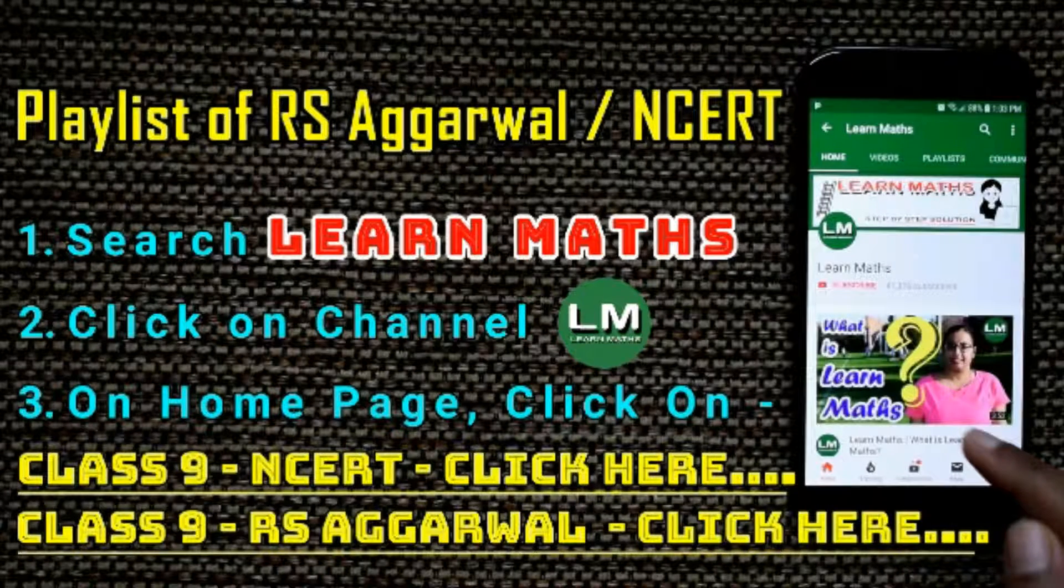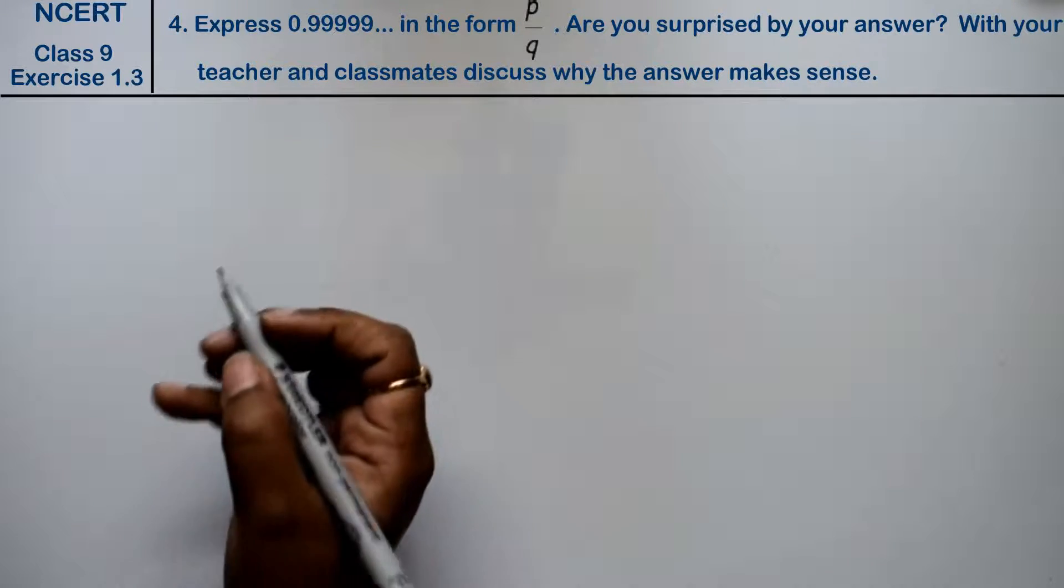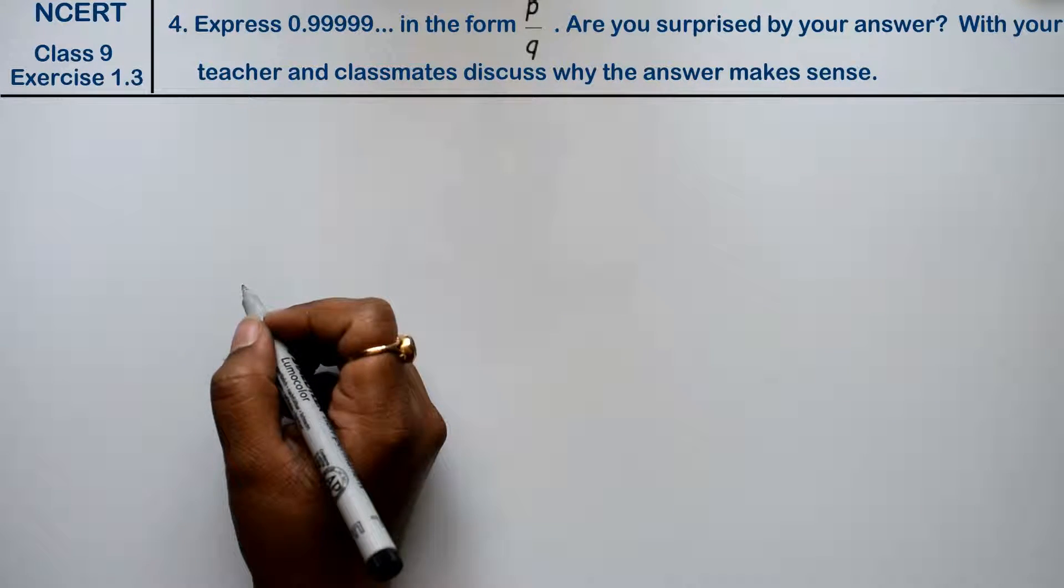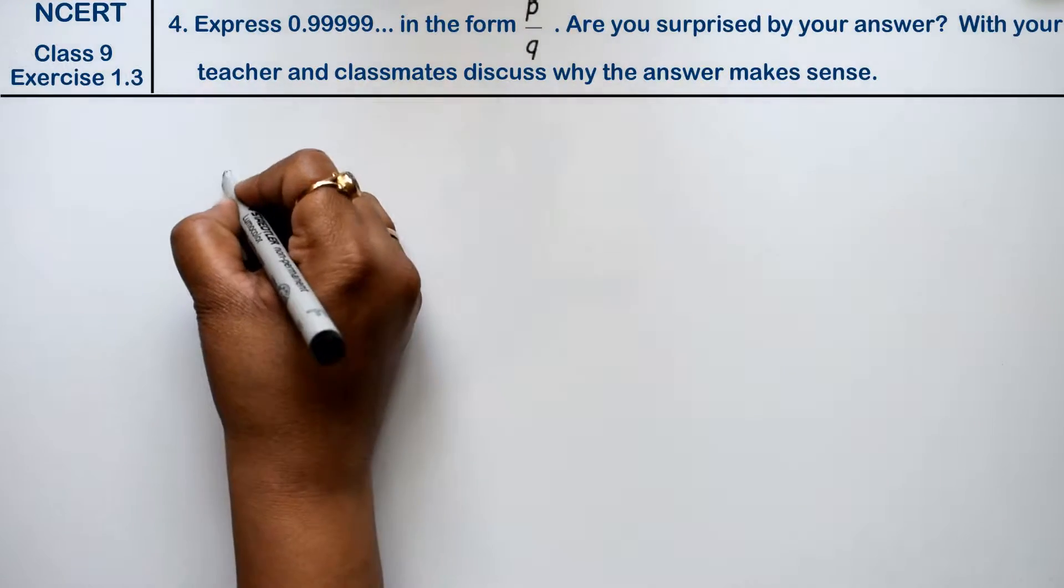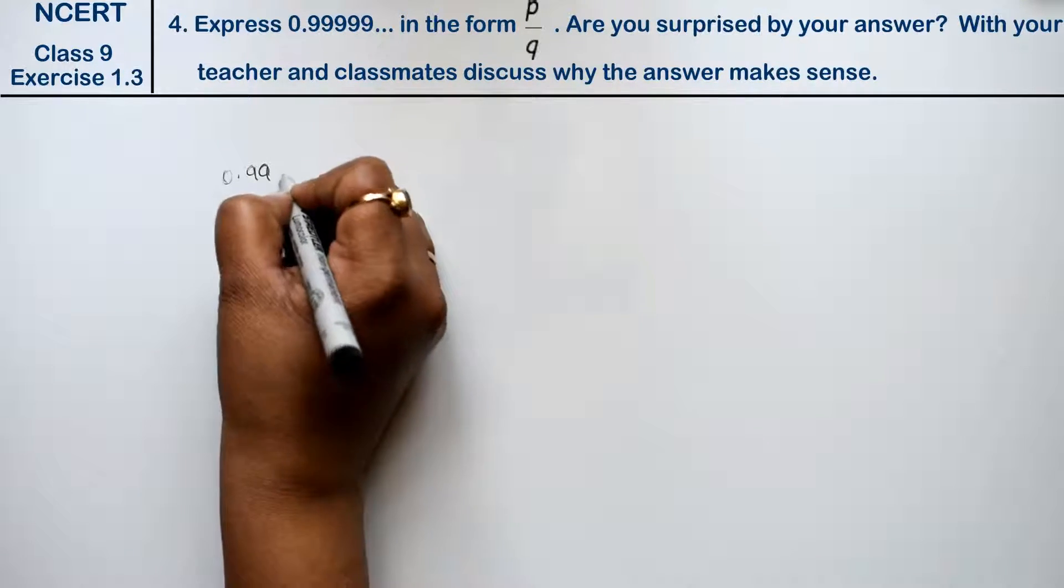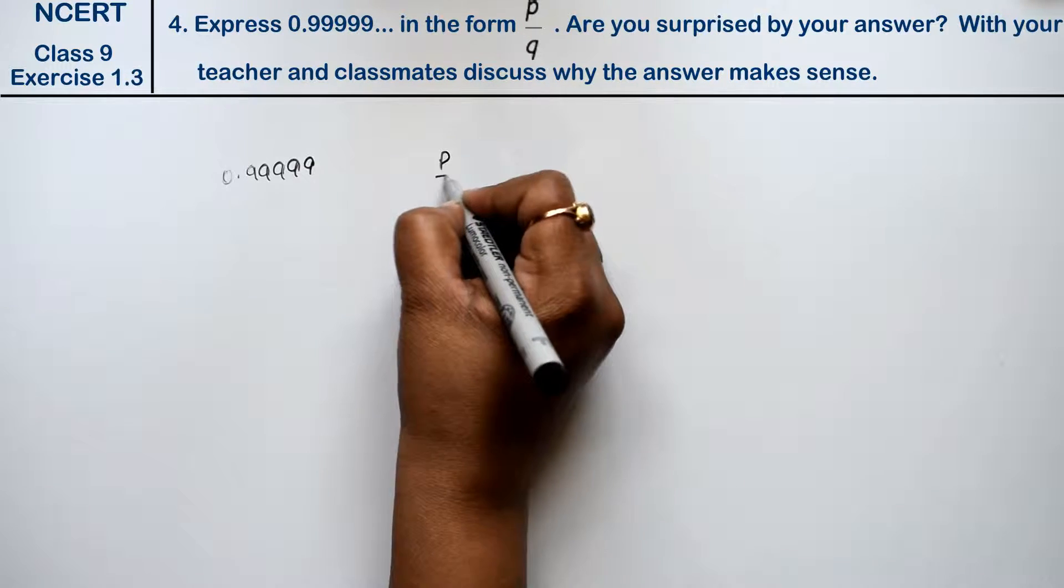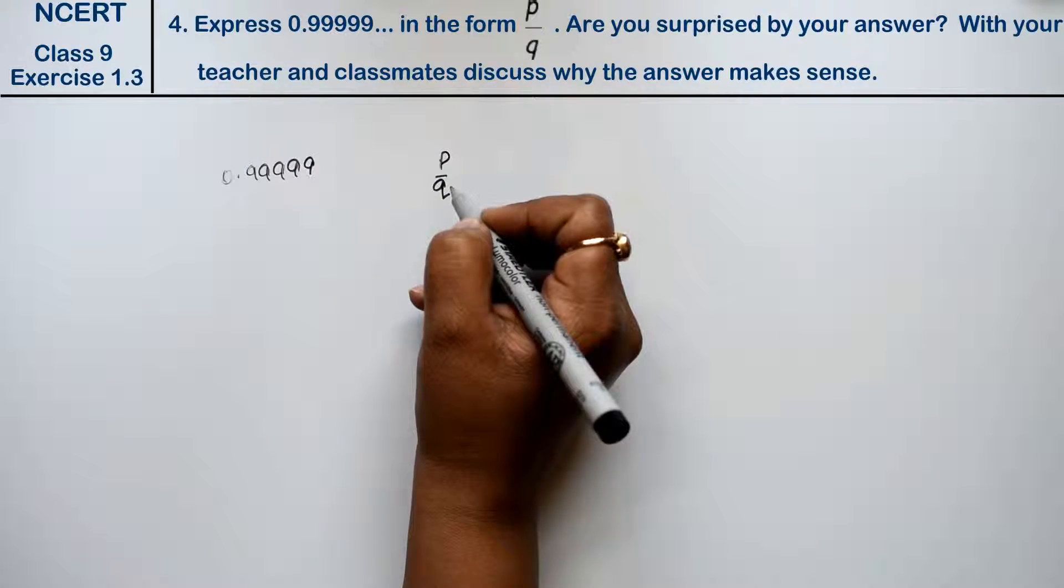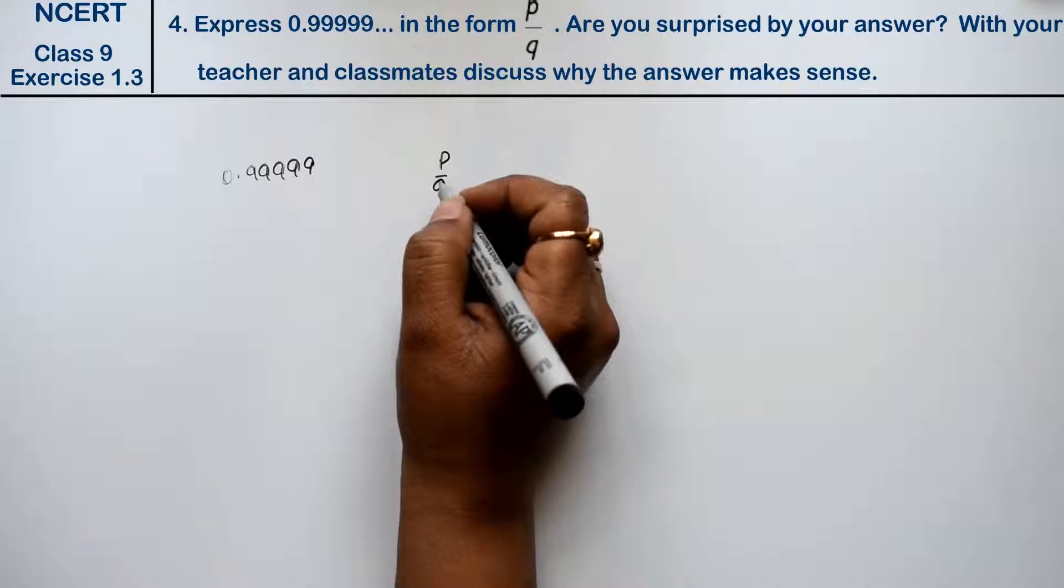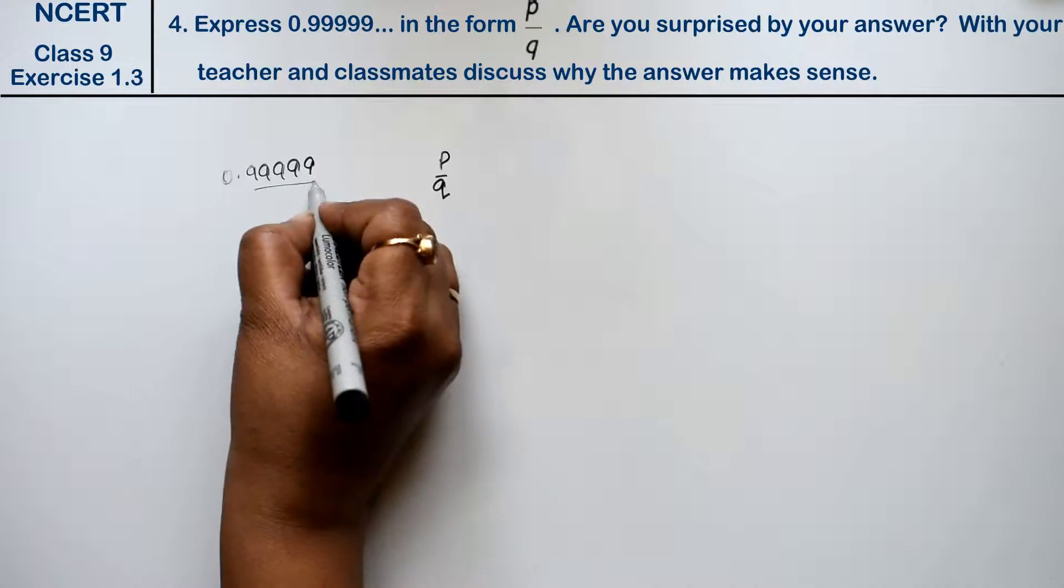Let's do question number 4 of exercise 1.3, that is number system. Question number 4 is: express 0.99999... in the form of p upon q. Are you surprised by your answer? With your teacher and classmates, discuss why the answer makes sense. Friends, what can we write this?